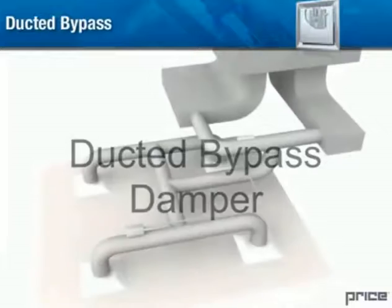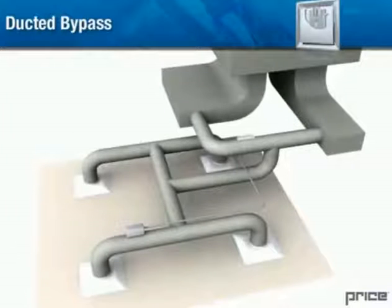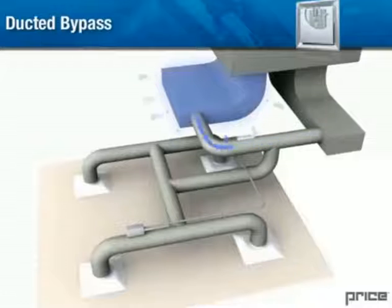Ducted bypass damper: This method is similar to the plenum return method except in this case you duct the bypass exhaust straight to the return ductwork. Methods to ensure that the plenum does not get pressurized must still be taken, such as an exhaust fan or rooftop relief damper, since the return ductwork can still become pressurized and bypass into the plenum.